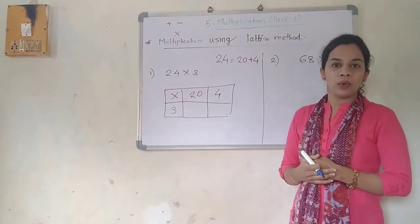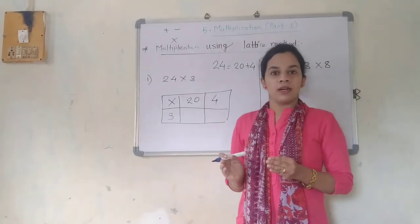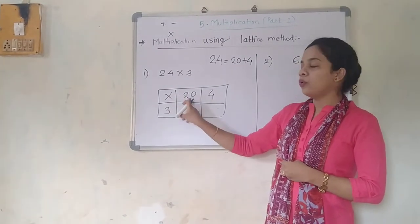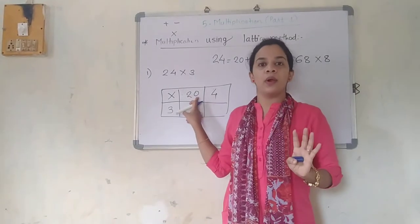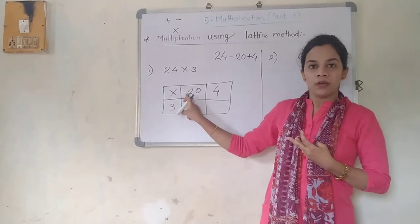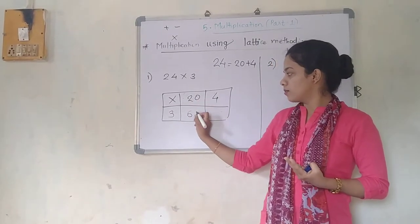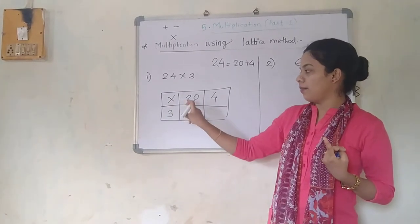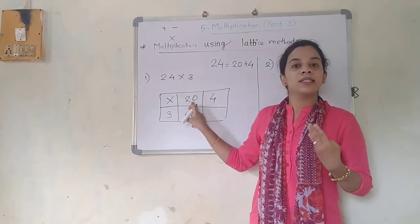So now just see how we are going to calculate it. 3 into 20 — that is 3 multiplied by 20. Now there is one small trick: 3 into 2 — what is 3 into 2? It is 6, and that 0 is as it is, so here 1 zero. I multiplied this 3 by 20. 3 multiplied by 20, the answer is 60. In simple way: 3 into 2 is 6 and this 0 stays as it is.